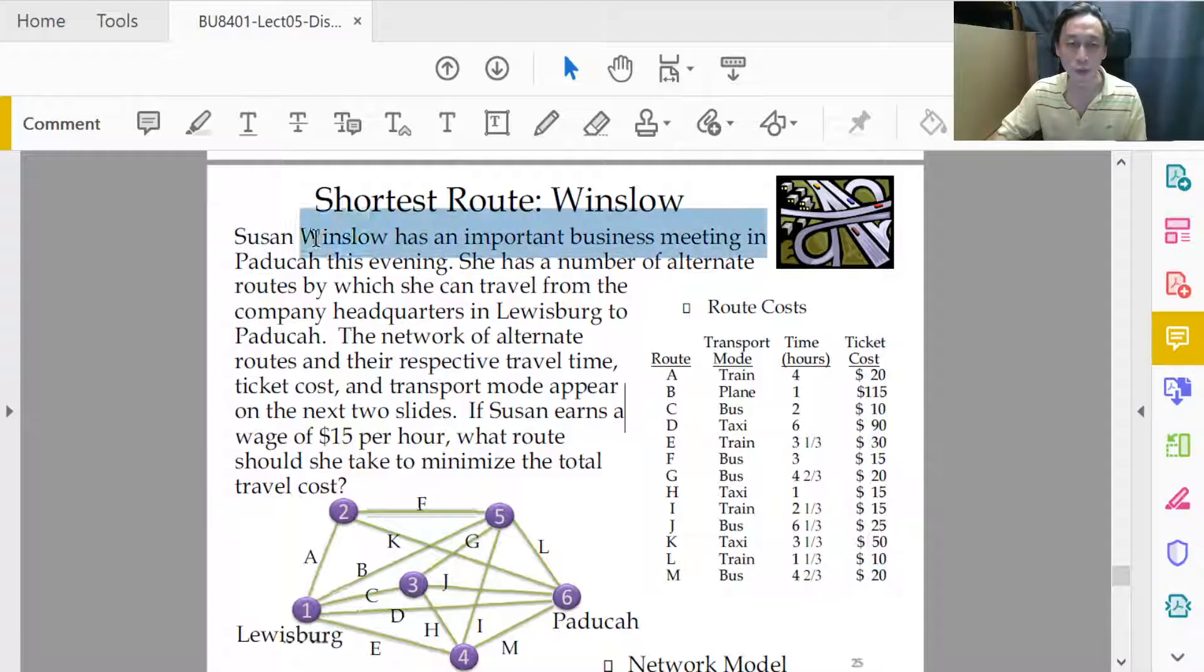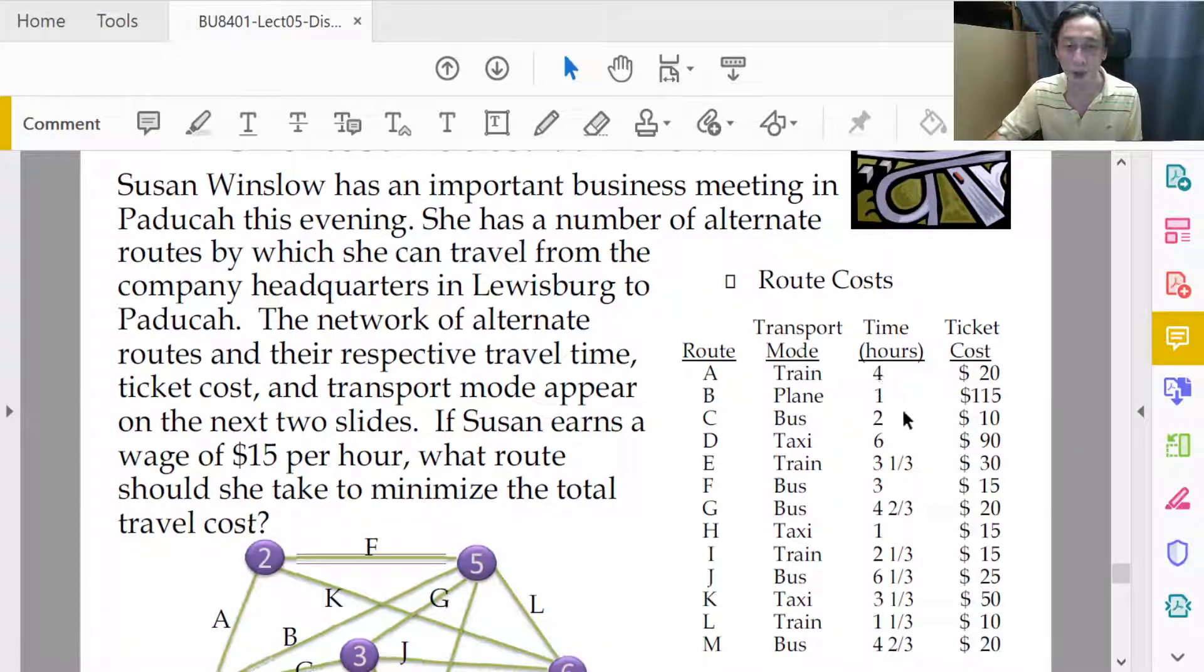Here we have Susan Winslow having to travel from Lewisburg to Paducah, City 1 to City 6, and she collected all the costs that are involved. This example is nice because there is obviously the ticket cost, but there is also a traveling time that we understand will take.